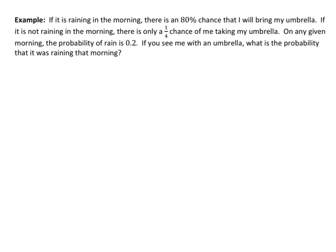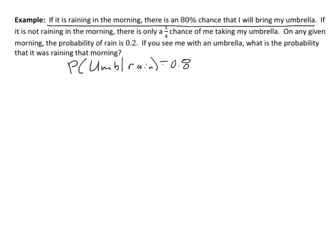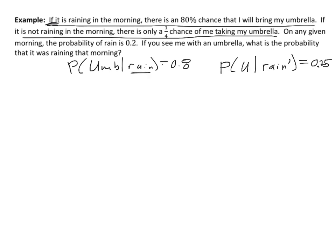The first thing I want to do is identify what's happening in this problem. Right off the bat: if it's raining in the morning, there's an 80% chance I bring my umbrella — so the probability of umbrella given rain is 0.8. If it's not raining, there's only a one-in-four chance, so the probability of umbrella given not rain is 0.25. I've got these two conditional probabilities, both conditional on rain. Then we're told on any given morning, the probability of rain is 0.2 — that's an unconditional probability.